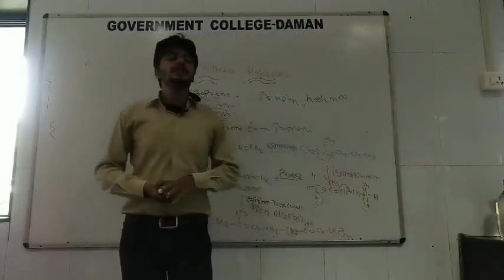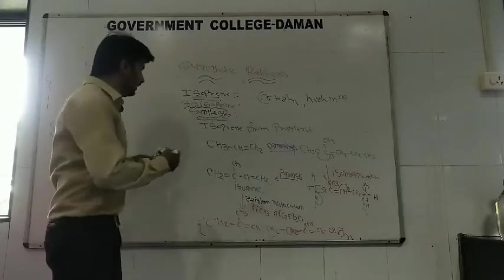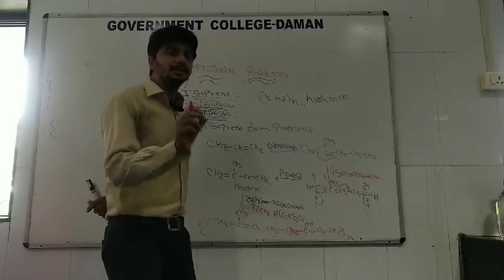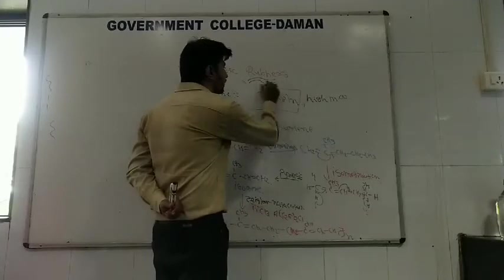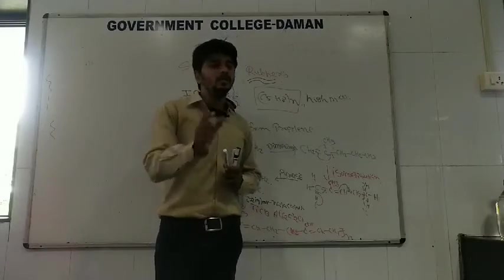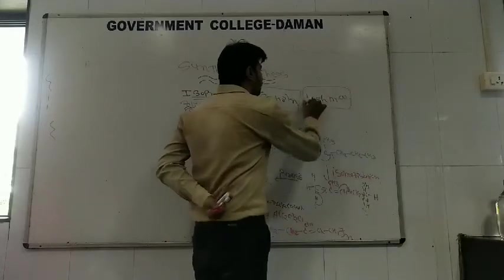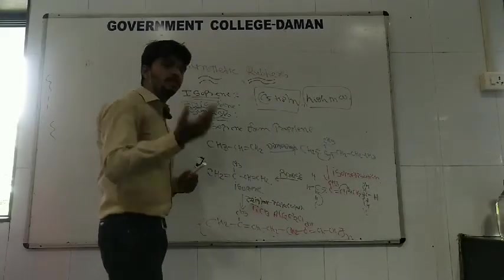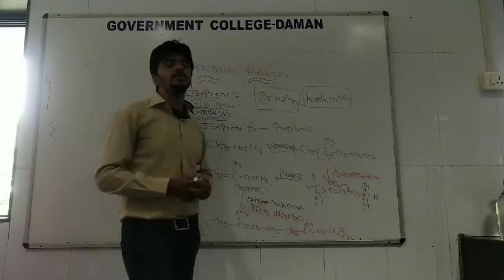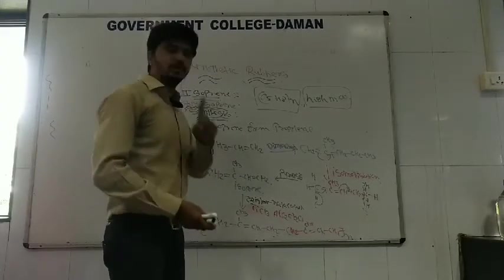Now we start with the first synthetic rubber, isoprene, and the second is polyisoprene. As I told you in a previous video, every natural rubber is an isoprene unit, that is C5H8, and C5H8 is nothing but 2-methyl-1,3-butadiene. It is a high molecular weight natural rubber. Here we will discuss how we can prepare these in industry by using different starting materials or chemicals.